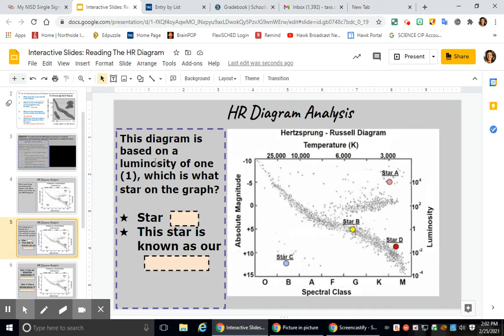This diagram is based on the luminosity of one. So here is luminosity. Always look for the title that they're asking for. So if they're talking about luminosity, find where it is on the graph. So it's vertically up and down. This diagram is based on the luminosity of one, which is what star on the graph. So if this is luminosity one and we go across, we can see that star B is with a luminosity of one. This star is also known as our sun. Our sun is a main sequence star with a luminosity of one.